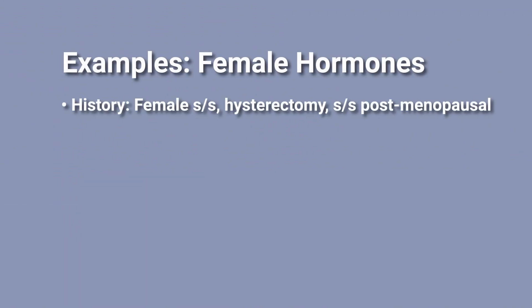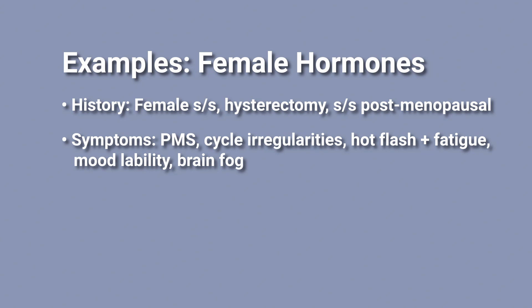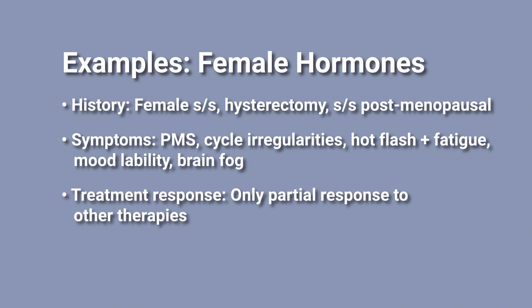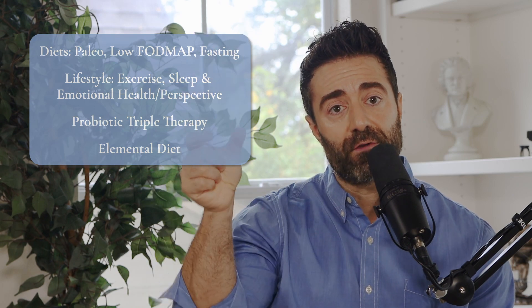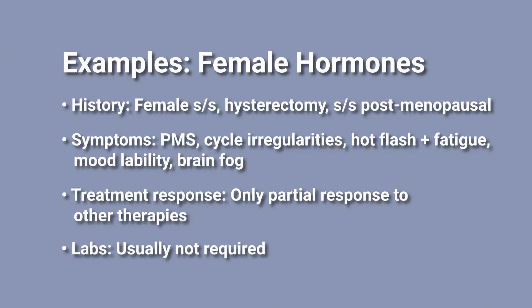Female hormones are another good example. If a woman has a history of female symptoms — perhaps starting post-hysterectomy or post-menopausal — and she's having symptoms of PMS, cycle irregularities, hot flashing, fatigue, mood swings, and brain fog, and as you work down the trunk there's only been a partial response to other therapies, that's a good time to pursue female hormone support. But we don't want to jump right to this branch because many cases of female hormone imbalances — or at least the symptoms of them — will resolve once we work through the trunk. And because the herbal treatments act in a corrective or adaptogenic fashion, labs aren't required — it doesn't matter if estrogen or progesterone is a bit high or low. So another example of the limited utility of labs.